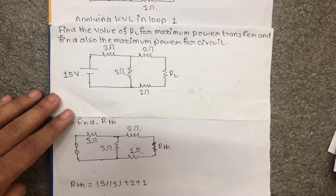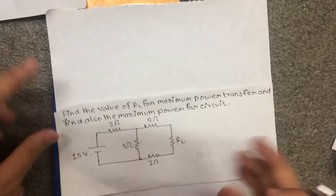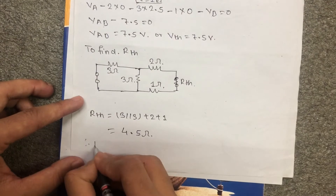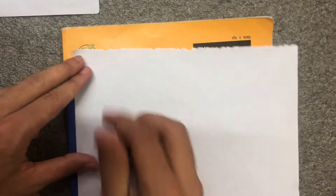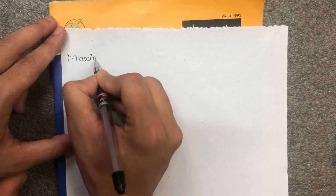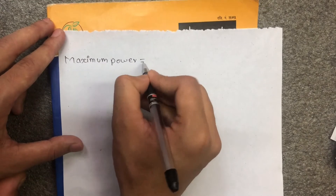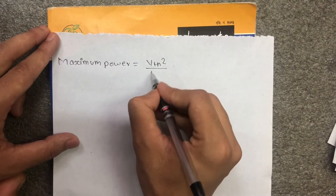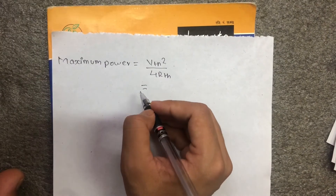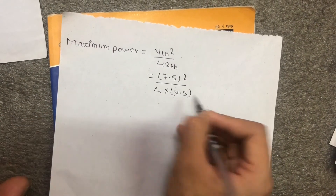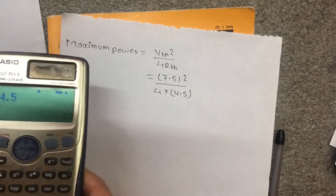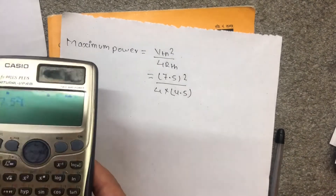Now we calculate maximum power using the formula: maximum power equals Vth squared divided by 4 times Rth. Substituting: Pmax equals 7.5 squared divided by 4 times 4.5, which equals 56.25 divided by 18.